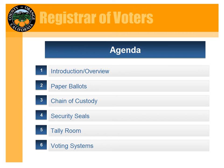What we're going to go over: we'll give an introduction, talk about security with paper ballots, discuss the chain of custody covering how ballots are transported, security seals and how we use them to add security, the tally room where all votes are tallied, and conclude with voting system security.